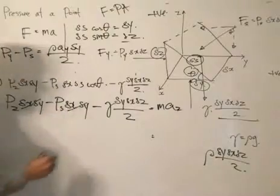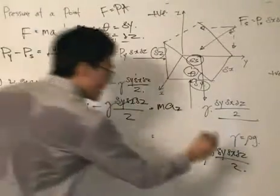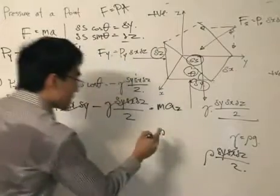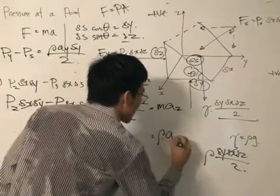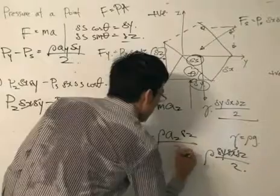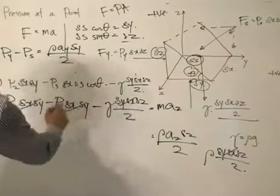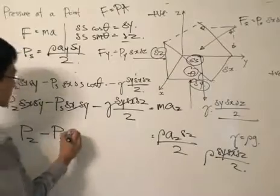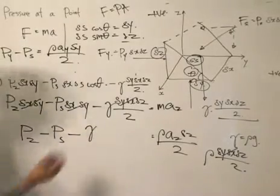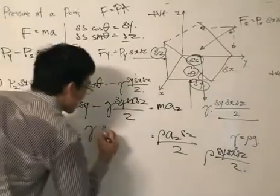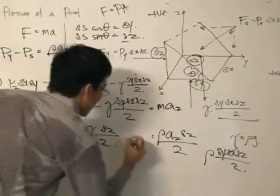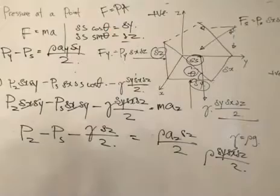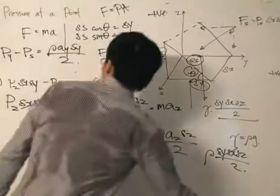After eliminating the common factors, the second equation becomes: pressure at Z minus pressure at S minus specific weight times delta Z divided by 2, equals density times acceleration in the Z axis times delta Z divided by 2. That is the second equation we have, resolving in the Z direction and simplifying.